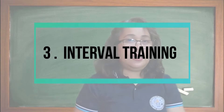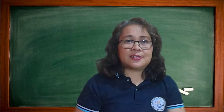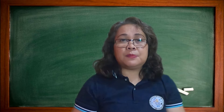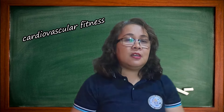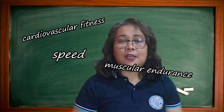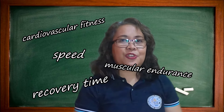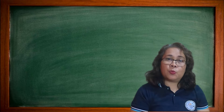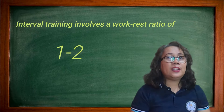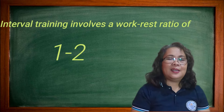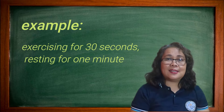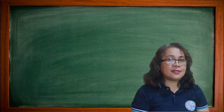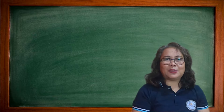Interval training involves a period of exercise or work followed by a period of rest. It is effective at improving cardiovascular fitness, muscular endurance, speed, recovery time, and lactate threshold. Typically, interval training involves a work-to-rest ratio of 1 to 2 — for example, exercising for 30 seconds then resting for 1 minute. The length of work periods and rest is dependent on your intended outcome.